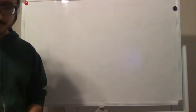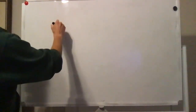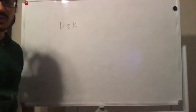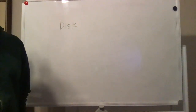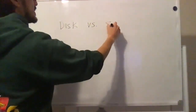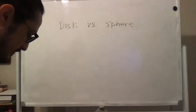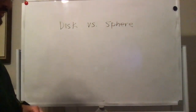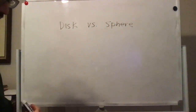Today we're going to talk about accretion disks. The first question is: why does matter accrete in the shape of a disk as opposed to a sphere? It definitely has to do with angular momentum and rotation — almost everything has angular momentum.